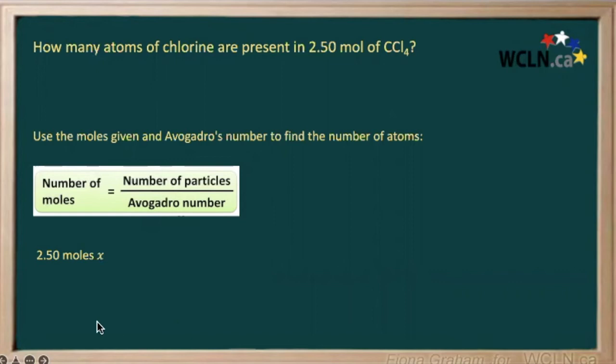So we have 2.5 moles. We multiply that by Avogadro's number. Notice that our units of moles will cancel out, which means so far we've calculated the number of molecules that we have of carbon tetrachloride.